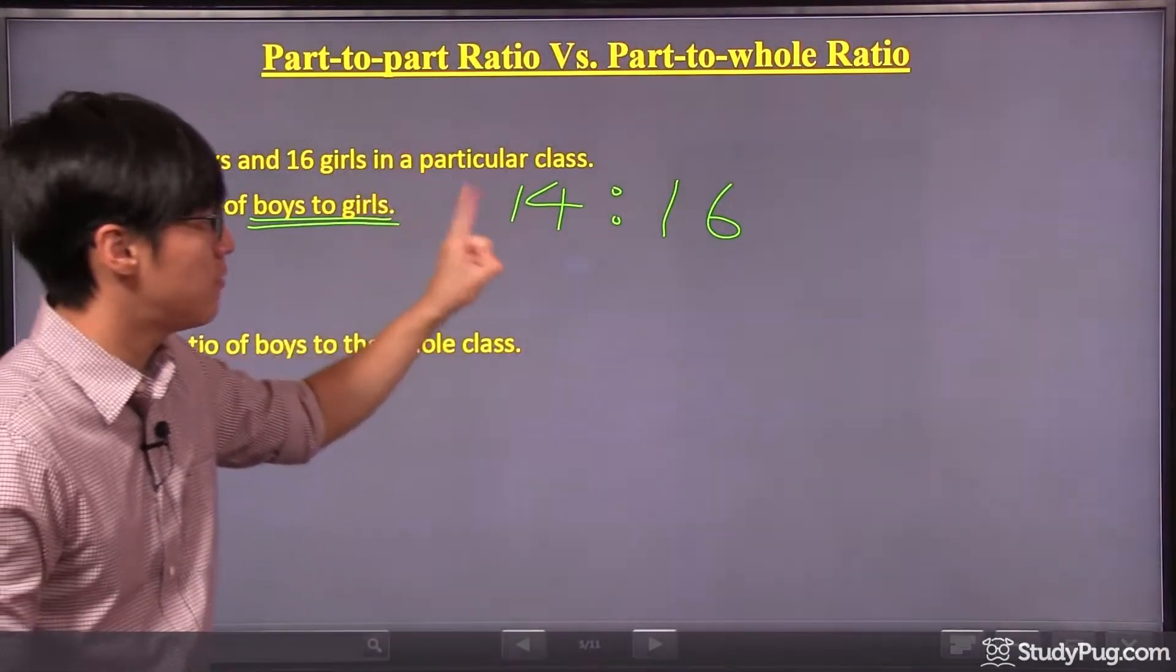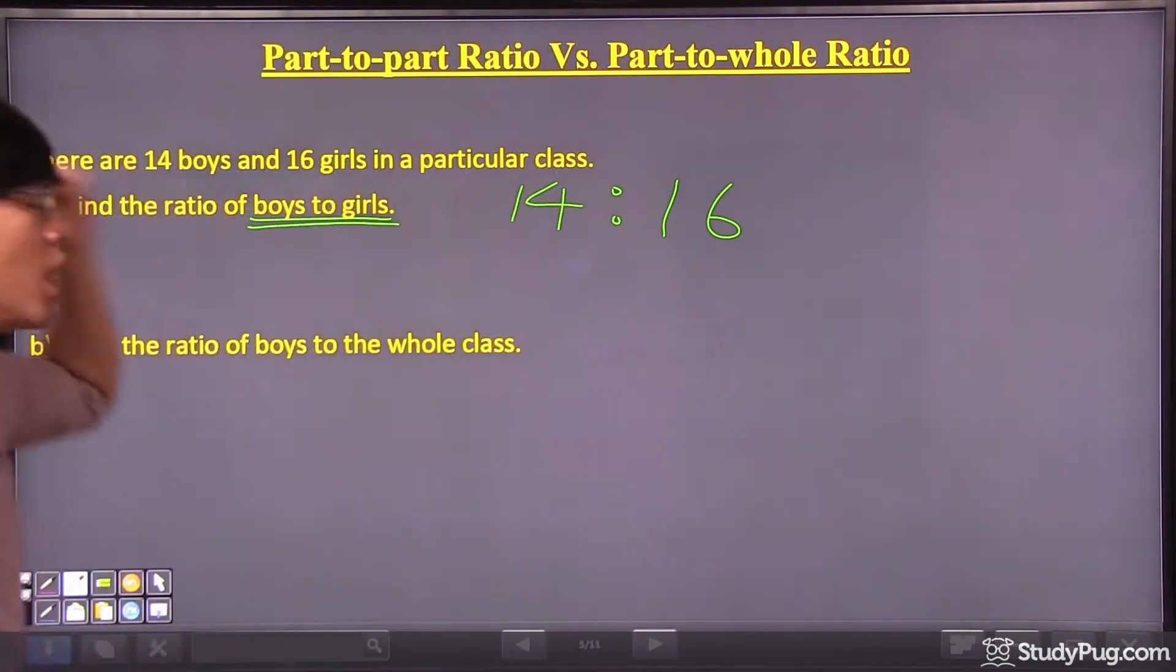So back to this question, we have 14 and 16, these two numbers. We actually have a common factor in here.